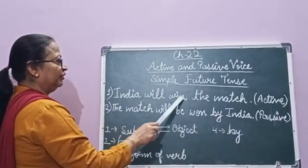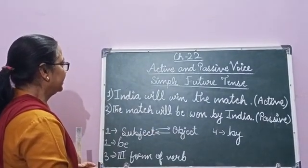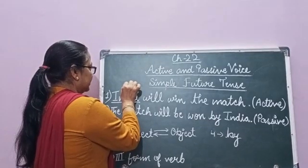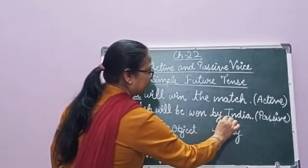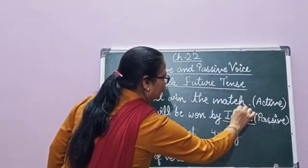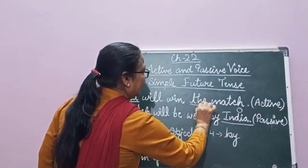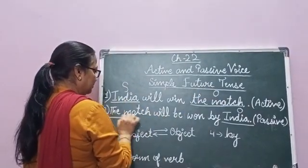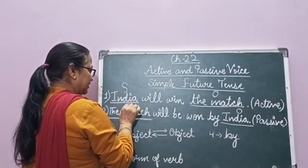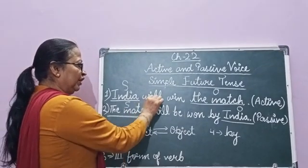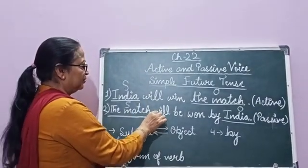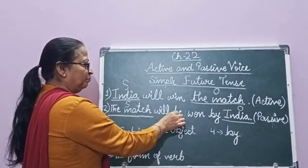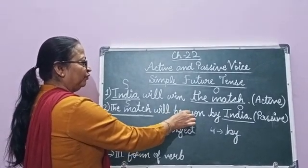In the sentence 'India will win the match', in active voice, India is the subject and it becomes the object in passive voice. The match is the object in active voice and it becomes the subject in passive voice. As we use will or shall, here we use will, followed by 'be' and the third form of the verb.